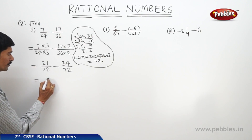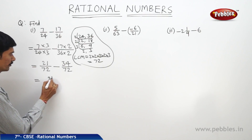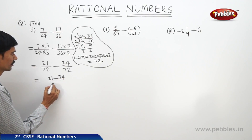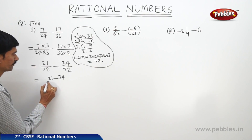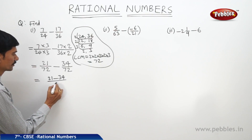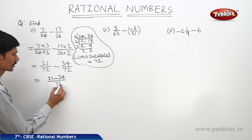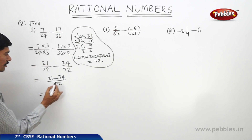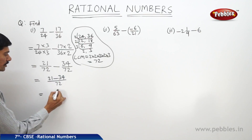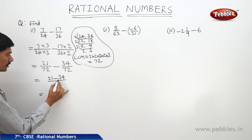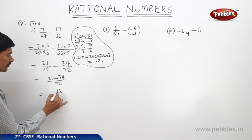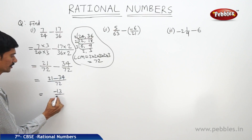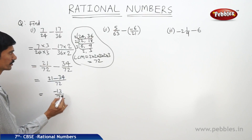If we simplify both numerators: 21 minus 34, divided by 72, keeping the same denominator. Now 4 minus 1 is 3 and 3 minus 2 is 1, so that is minus 13 by 72.